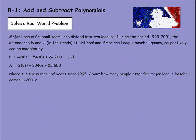Now we can solve a real-world problem. It says, Major League Baseball teams are divided into two leagues. During the period of 1995 to 2001, the attendance N and A in thousands at National and American League Baseball games, respectively, can be modeled by N for National League, -488t² + 5,430t + 24,700. And A for American, -318t² + 3,040t + 25,600. It says, t is the number of years since 1995. How many people attended Major League Baseball games in 2001? Well, first we need to add this polynomial because it's asking us about Major League Baseball, and both National and American are part of Major League Baseball.